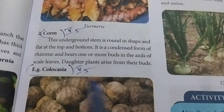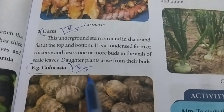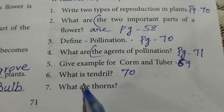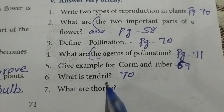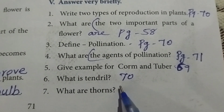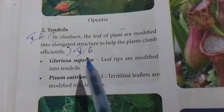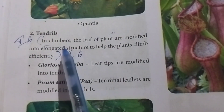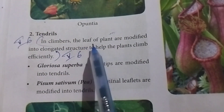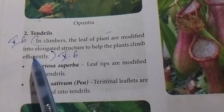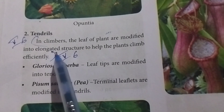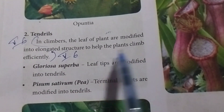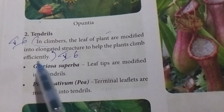Sixth question: What is a tendril? Referring to page number 70. In climbers, the leaves of the plant are modified into elongated structures to help the plant climb efficiently.